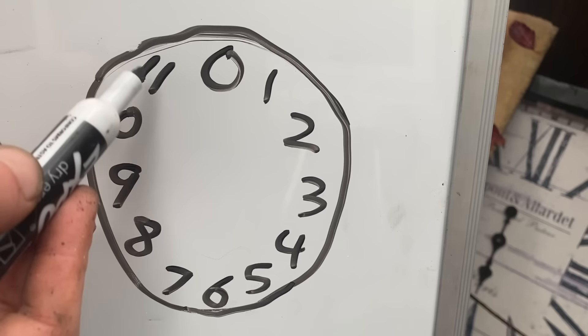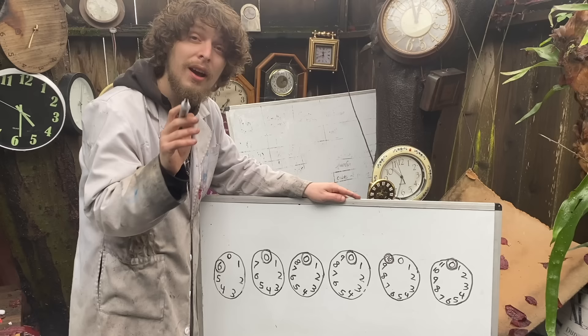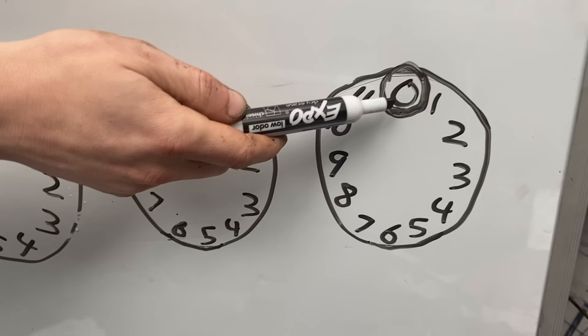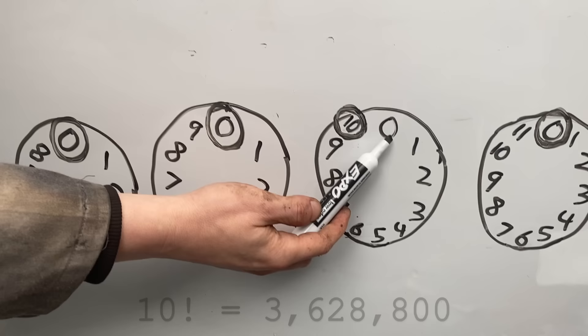I've circled the hour on each of these clocks we would land on if we played that game. On a 12-hour clock, if we started at that zero and added 11 factorial hours, which is a very large number, we'd end up back on the zero. On an 11-hour clock, if we added 10 factorial hours starting from the zero, we'd end up on the 10.